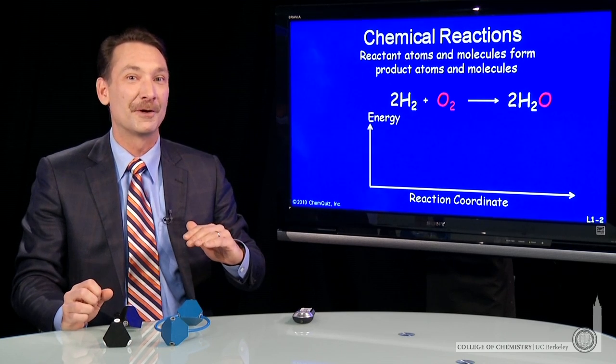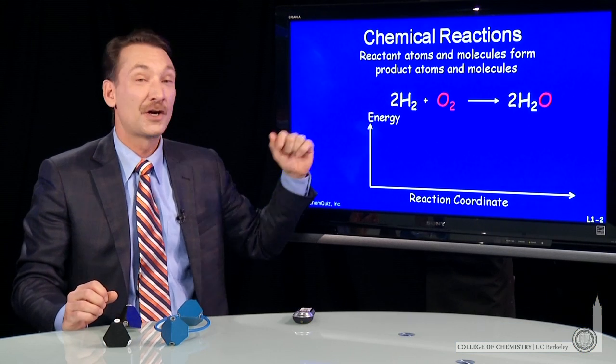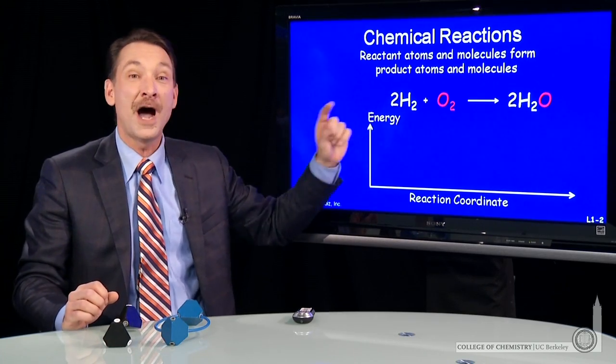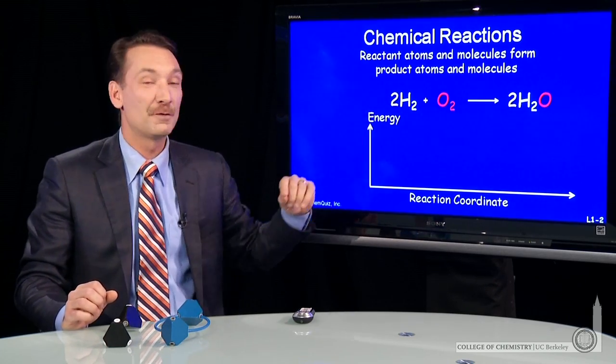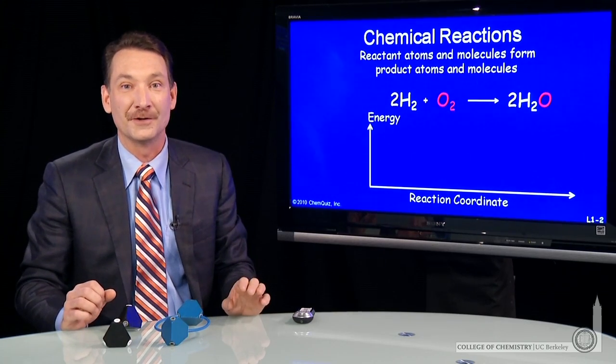Let's start with a pretty simple chemical reaction: H2, hydrogen gas, plus O2, oxygen gas, to form water. And I've written this carefully with a coefficient of 2 in front of the hydrogen. That says two hydrogen molecules will react with one oxygen molecule to form two water molecules.